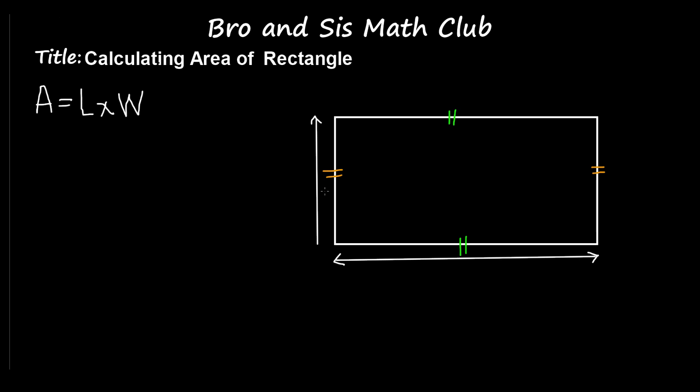To calculate the area, we need to multiply length times width. So let's say that the length of this rectangle is 7 inches and the width of this rectangle is 4 inches.